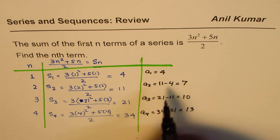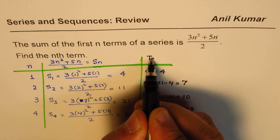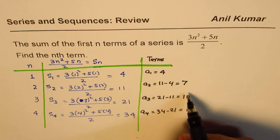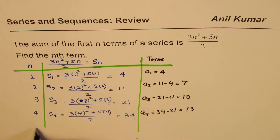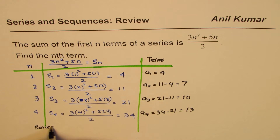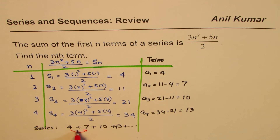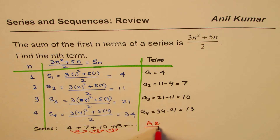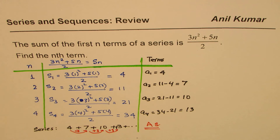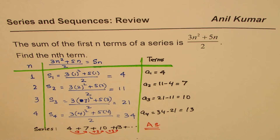So the terms in the series are 4, 7, 10, 13, and so on. As you can see, we are adding 3 each time to get the next term — that is an arithmetic series. So we've confirmed this sum is the sum of n terms of an arithmetic series with first term 4 and common difference 3.